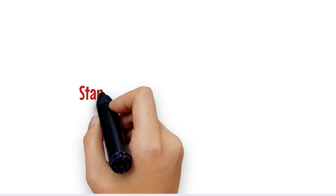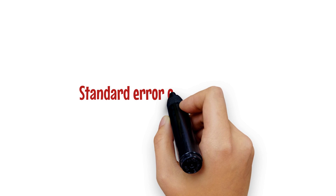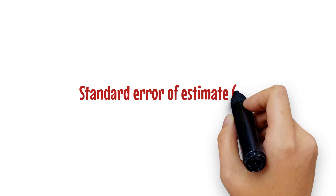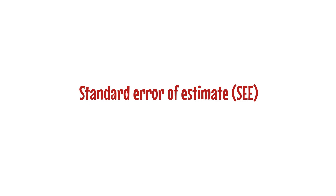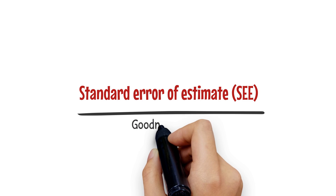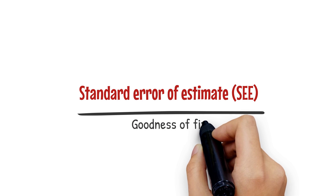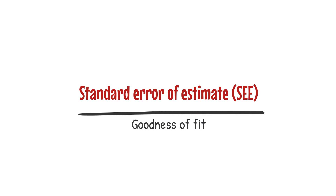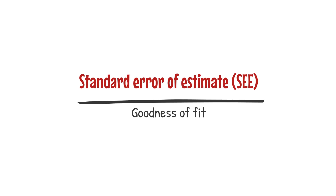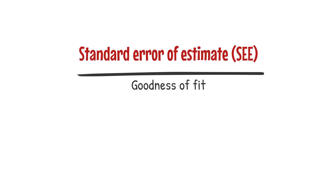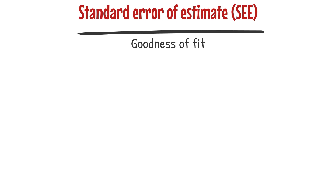The standard error of estimate, which is also sometimes called the standard error of regression, provides a good measure for testing the goodness of fit for any regression model. This statistic is very much like the standard deviation for a single variable, except it measures the standard deviation of the error term or the residual term in the regression.